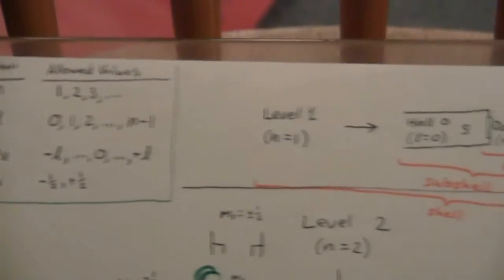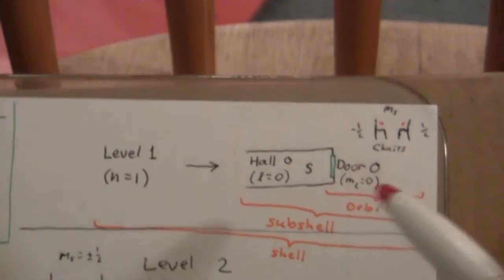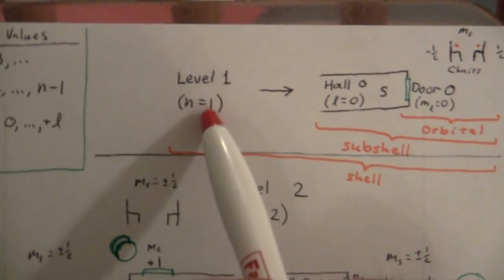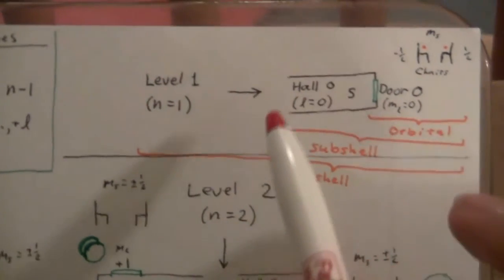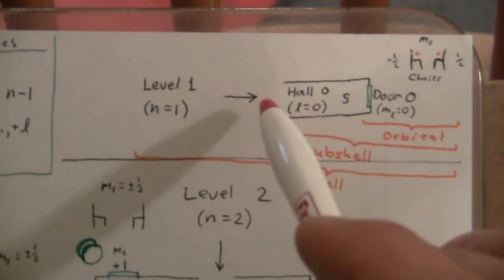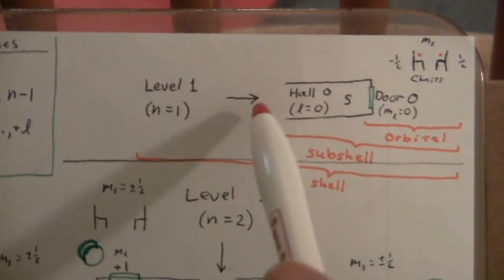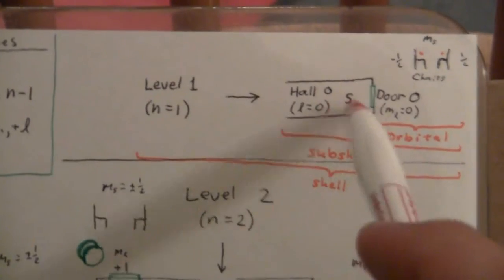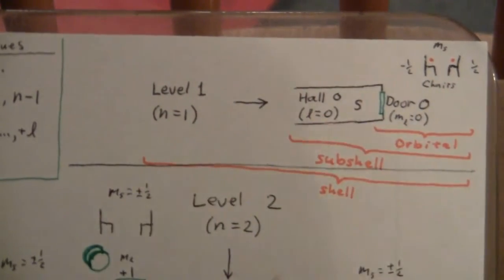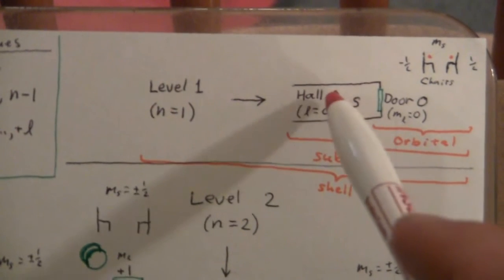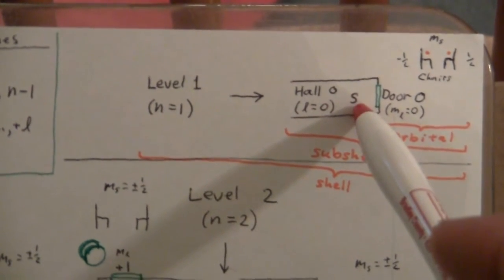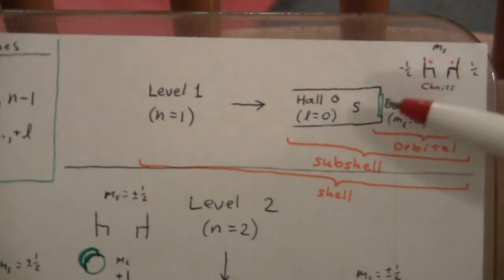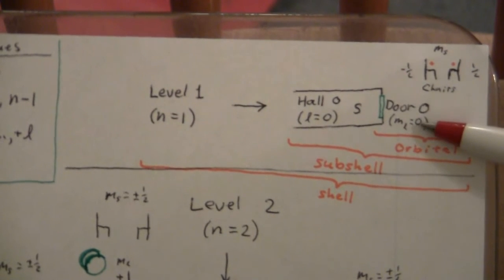First, level one, we have, that's when N equals one. So this is like the ground level of our atomic hotel. So here's where you enter in, and this is looking like at a floor plan. Here's the hallway, and we call it hall zero, or L equals zero. And we give it a letter also. When L is zero, we call that S.